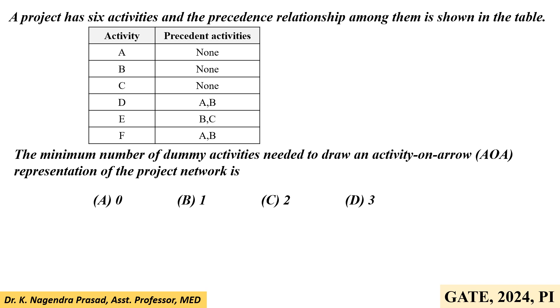Option A is zero, option B is one, option C is two, option D is three. This problem is given in the GATE 2024 production and industrial engineering paper.